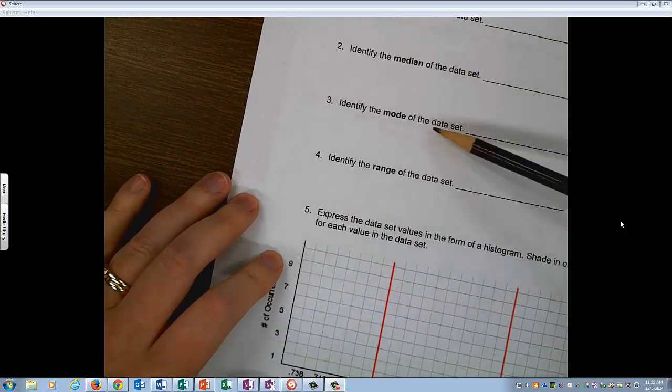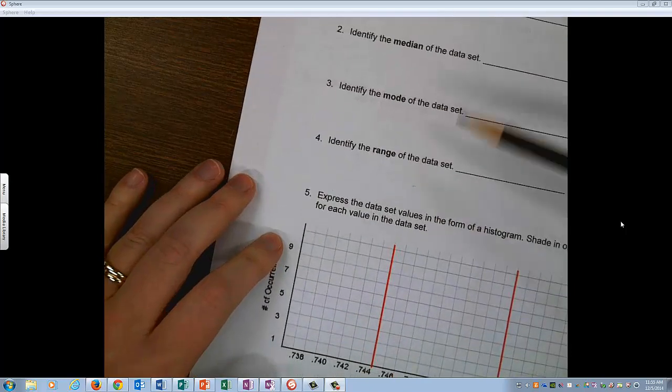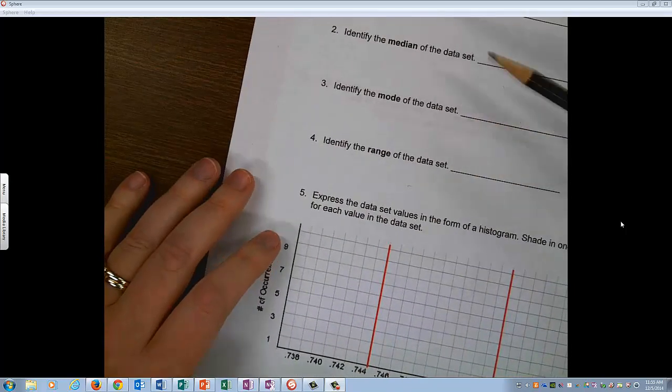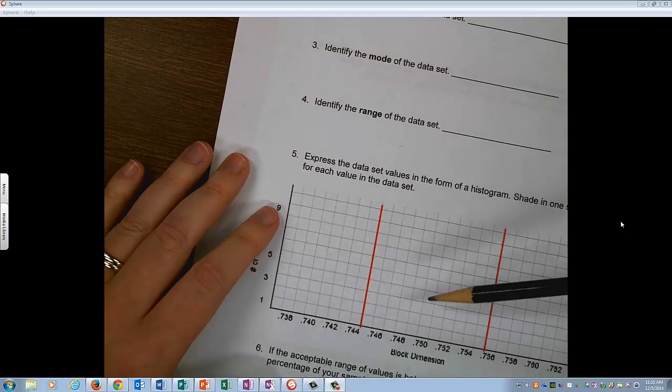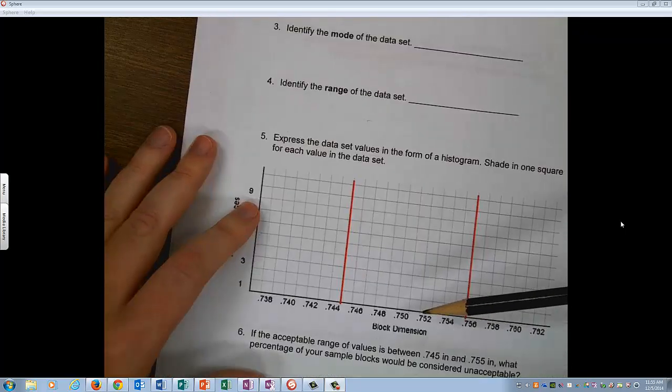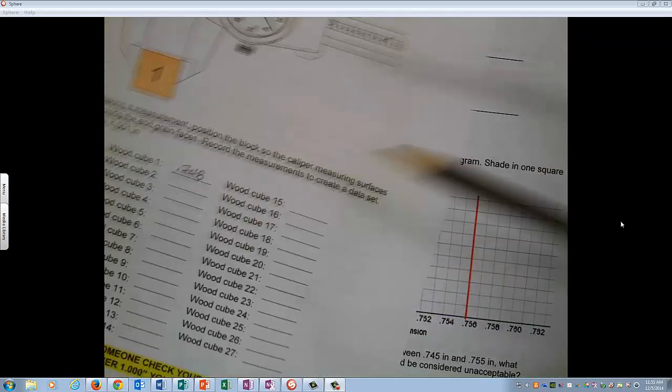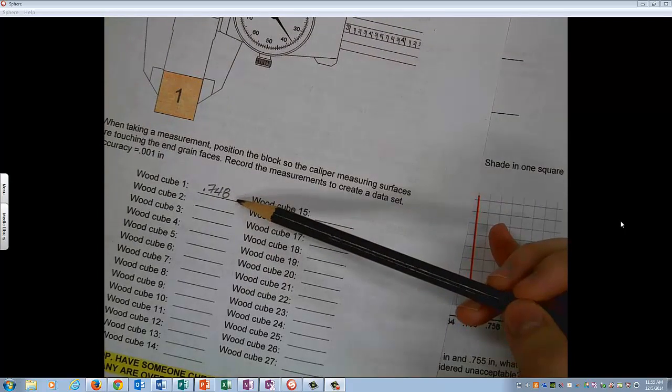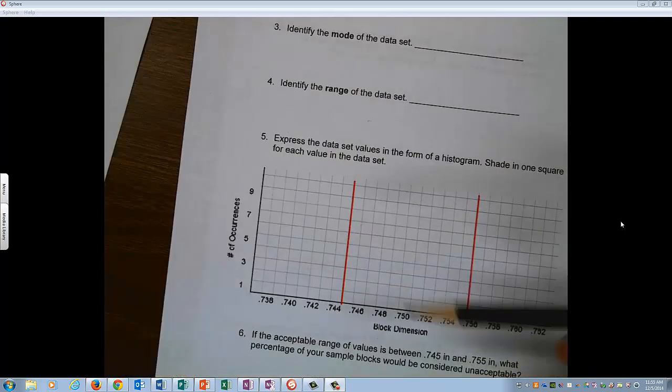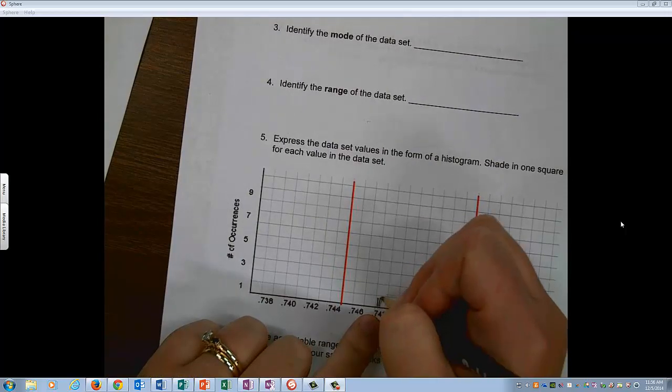So once I have my twenty seven cubes measured, I am going to find the mean, the median, the mode, the range and you can do this in Excel just like I showed you. And then you are going to do a histogram. And the way you do the histogram is you take each number here, point seven four eight and you find point seven four eight and you color in that block. And once you color in all twenty seven blocks it is going to give you a histogram to work with.